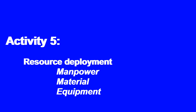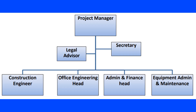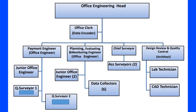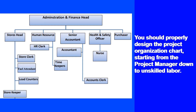Activity number five: resource deployment — manpower, material, and equipment. The first thing in this activity is manpower deployment. As a project manager, you need to prepare the project organizational structure based on the scope of the project and bid requirements regarding key personnel. This is the organization of people, their roles, processes, and reporting system — sometimes known as the line of command.